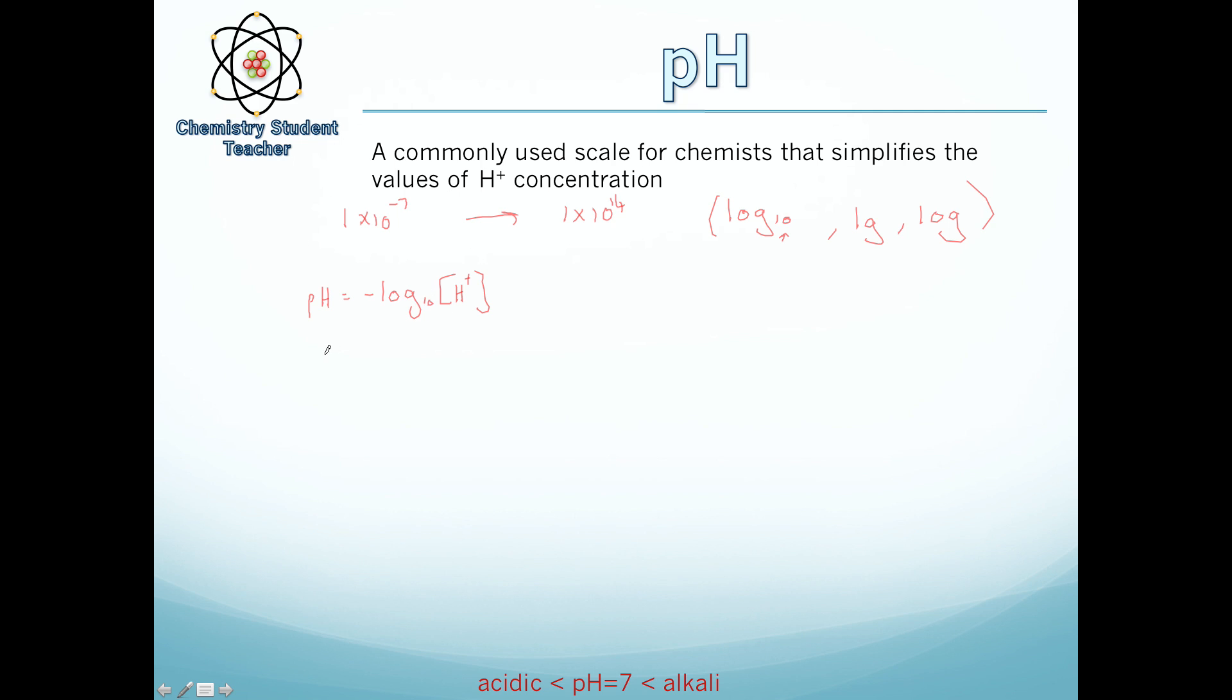Now, what we do is we put the value in there. So, it could be 1 times 10 to the minus 7. What a log to the base 10 does is basically eliminates this 1 times 10 and leaves a minus 7. And as we've got a minus there, that gets rid of that minus. So, when you put that in, the pH of this example here would actually be 7, which is that of water. And that's effectively the pH scale. We're just taking this top number and doing the inverse of it.